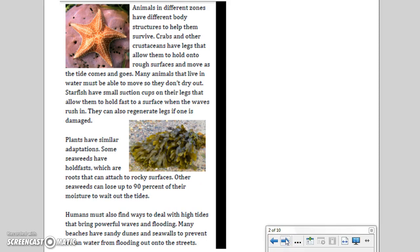Animals in different zones have different body structures to help them survive. Crabs and other crustaceans have legs that allow them to hold on to rough surfaces and move as the tide comes and goes. Many animals that live in water must be able to move so that they don't dry out. Starfish have small suction cups on their legs that allow them to hold fast to a surface when the waves rush in. They can also regenerate legs if one is damaged.